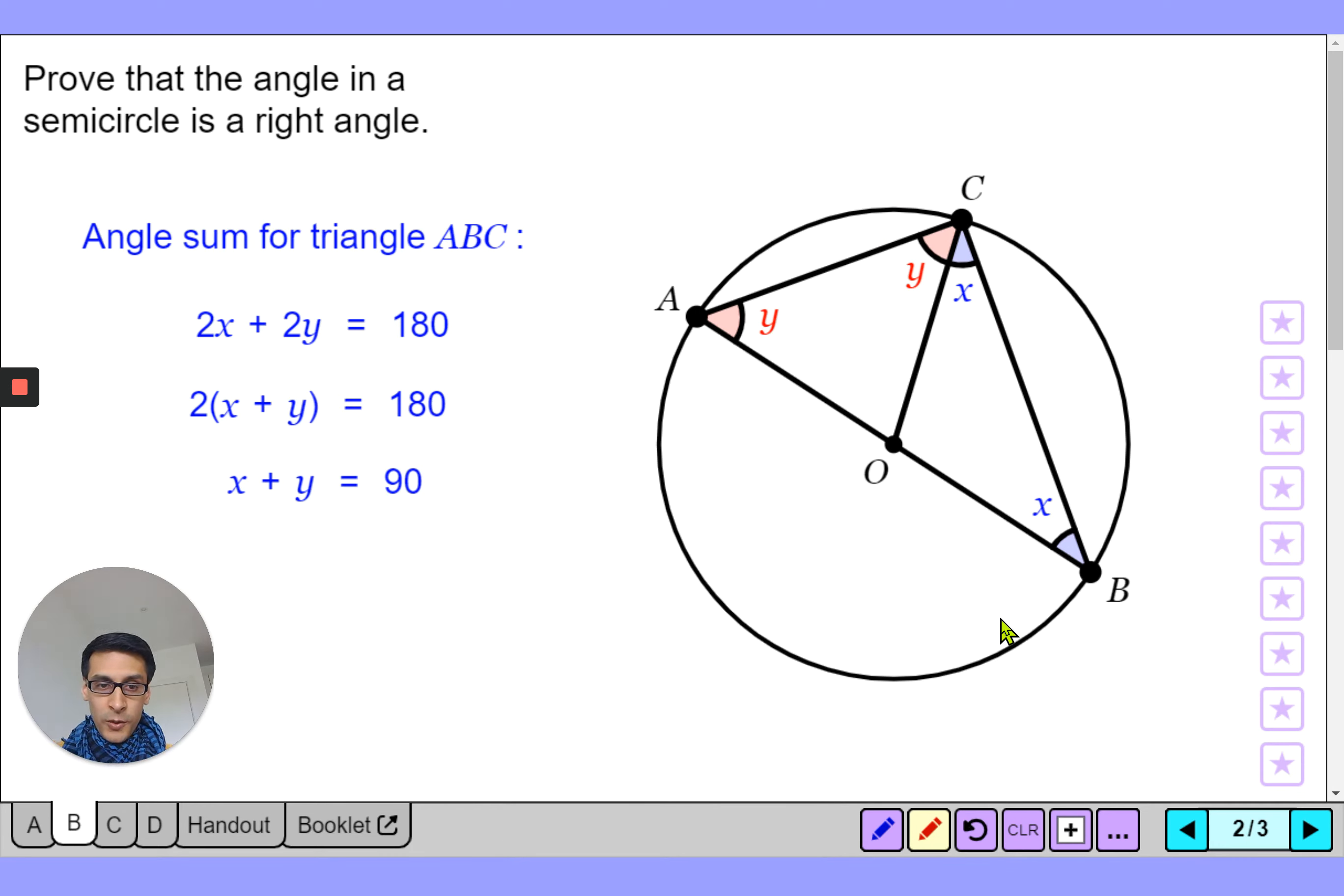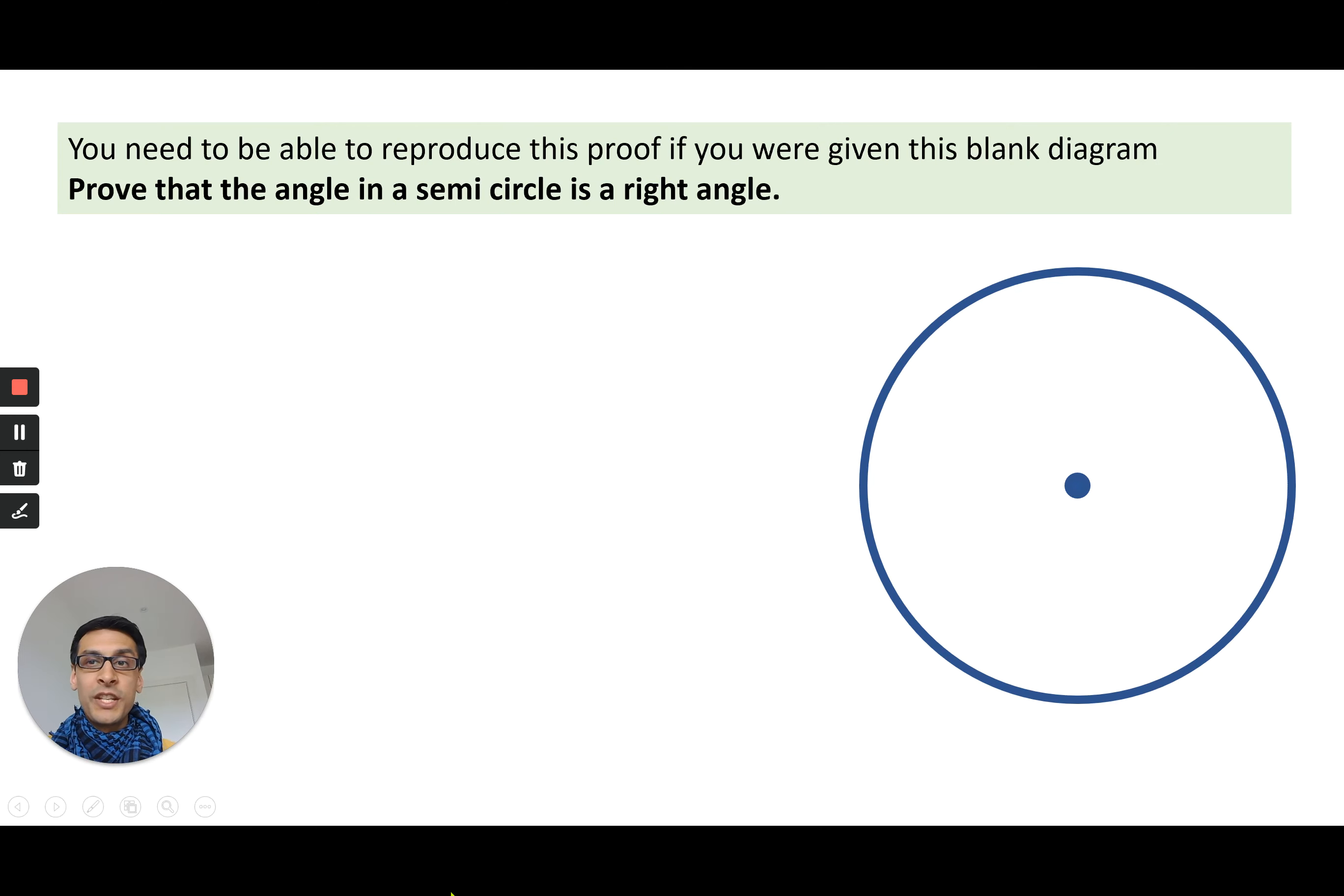So before we move on to a few more examples for this, I want you to have a go at reproducing the proof I just showed you from memory, so without looking back. It's fine if you make any small mistakes at this point. So let's just say you're given a blank circle and you have to produce the proof that I just showed you, so pause the video and have a go. Even if you've made notes of it, just try to do the whole thing from scratch.